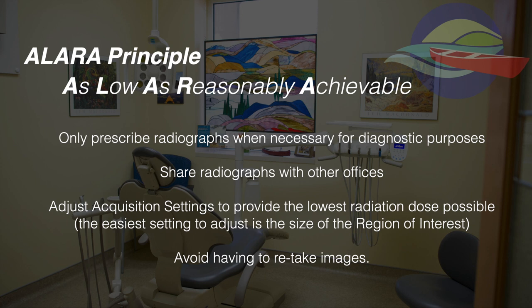The second way is to share these radiographs that you take with other offices, or have patients bring their most recent records to their appointment. The third way is to adjust the acquisition settings to provide the lowest radiation dose possible. The most simple setting to adjust is the size of that region of interest — so taking an image of only what's truly necessary.